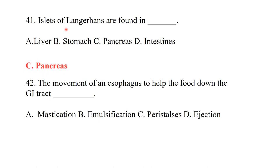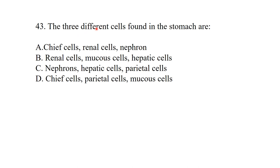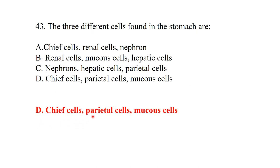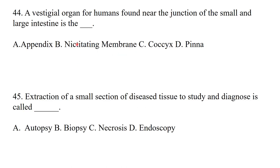Which of the following is most resistant to antiseptic sterilization? It is prions. Prions are very resistant to different types of sterilization and antiseptic procedures. Islets of Langerhans are found in the pancreas. The movement of the esophagus to move food down is called peristalsis. The three cell types found in the stomach are chief cells, parietal cells, and mucous cells. The vestigial organ in humans found near the junction of the small and large intestine is the appendix. Extraction of a small section of diseased tissue to study and diagnose is called a biopsy — biopsy is from living organisms; autopsy is from dead organisms.